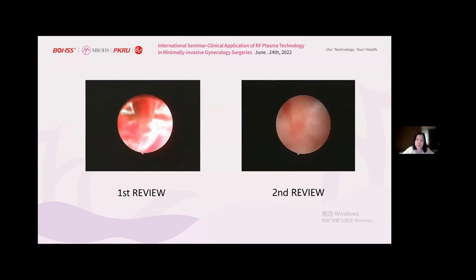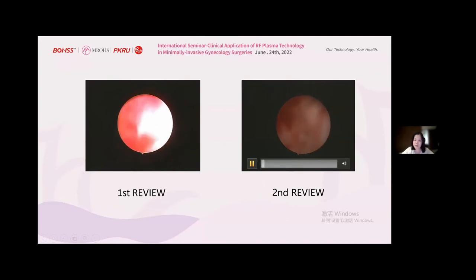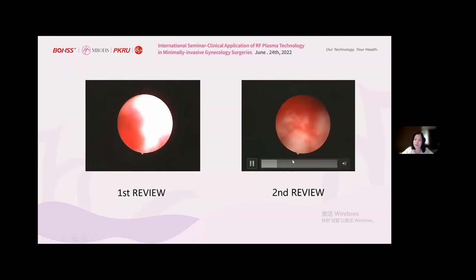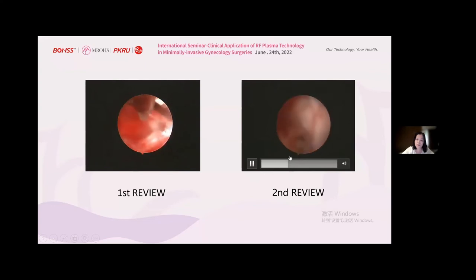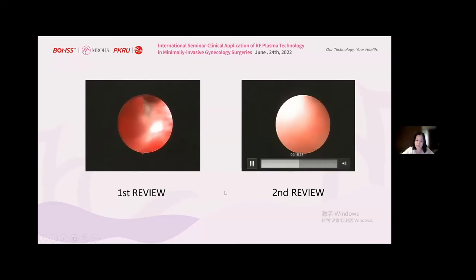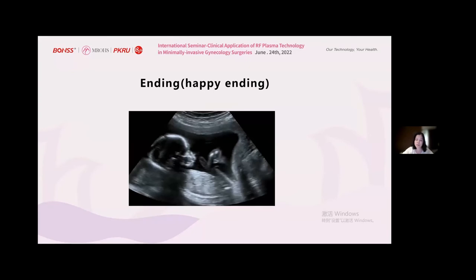Appropriate medication should be given after the operation. Two months later, we had the second review. Hysteroscopy showed the shape of the uterine cavity was basically normal, the endometrium was normal, and the bilateral openings of the fallopian tubes could be seen. Pregnancy mode should be selected according to the patient's condition and wishes after operation, and assisted reproductive technology should be recommended for severe intrauterine adhesion.